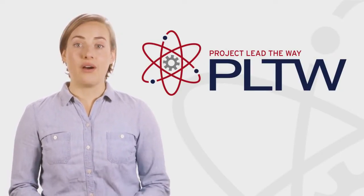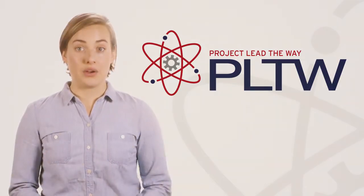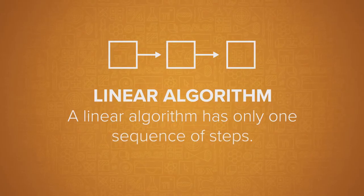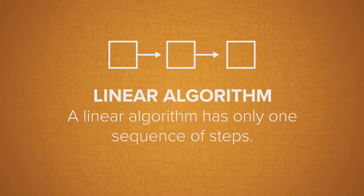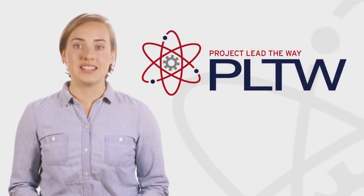Now there are several types of algorithms. For this video, we're going to explore linear algorithms. A linear algorithm has only one sequence of steps. So how do you write a linear algorithm? We'll use algorithmic thinking to work through an example together.